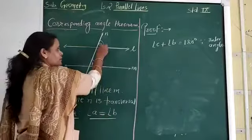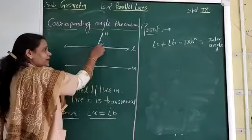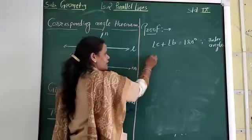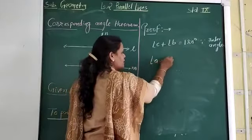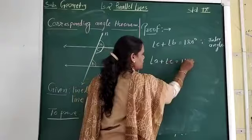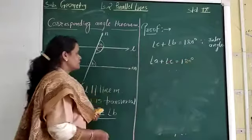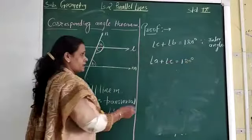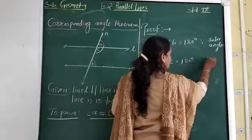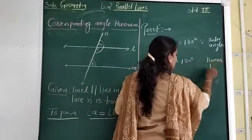By the same time, you can see angle A and C. Angle A and C, their sum is also 180 degrees. Why? Because they are the angles forming the linear pair. So these are the angles forming the linear pair angles.